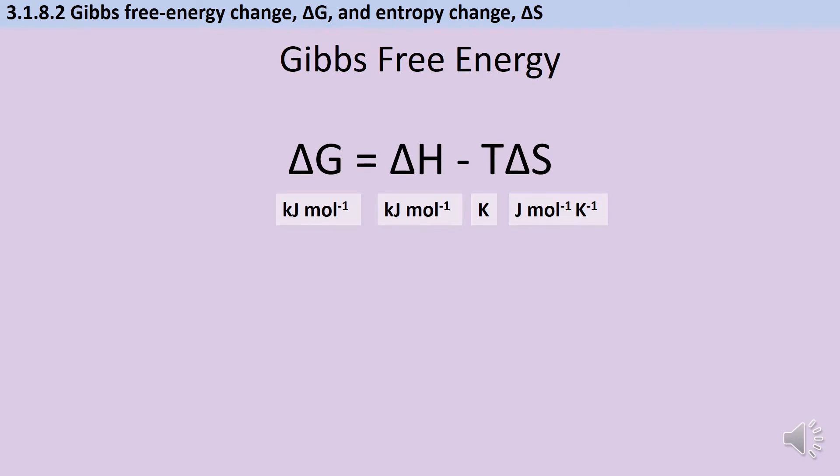But it's just worth identifying at this stage that the units for ΔH and ΔS are a little bit annoying in that ΔH is in kilojoules per mole but ΔS is in joules per mole per Kelvin. So when you're calculating Gibbs free energy you're going to need to take account of that and the fact that you're going to need to divide your answer for ΔS by a thousand before you can use it with ΔH.